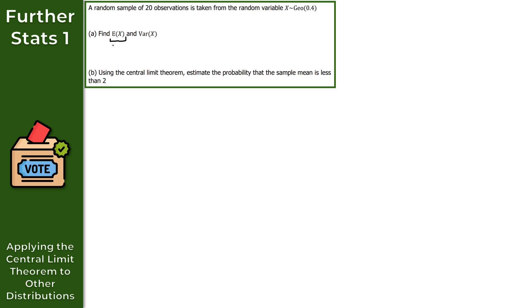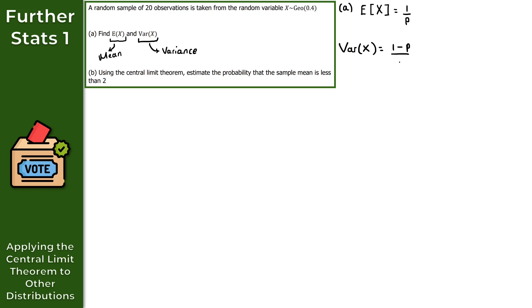E(X) is the same as finding the mean, and Var(X) is the variance. Given that X follows a geometric distribution, we use the standard formulas: E(X) equals 1 over p, and Var(X) equals (1 minus p) all over p squared.